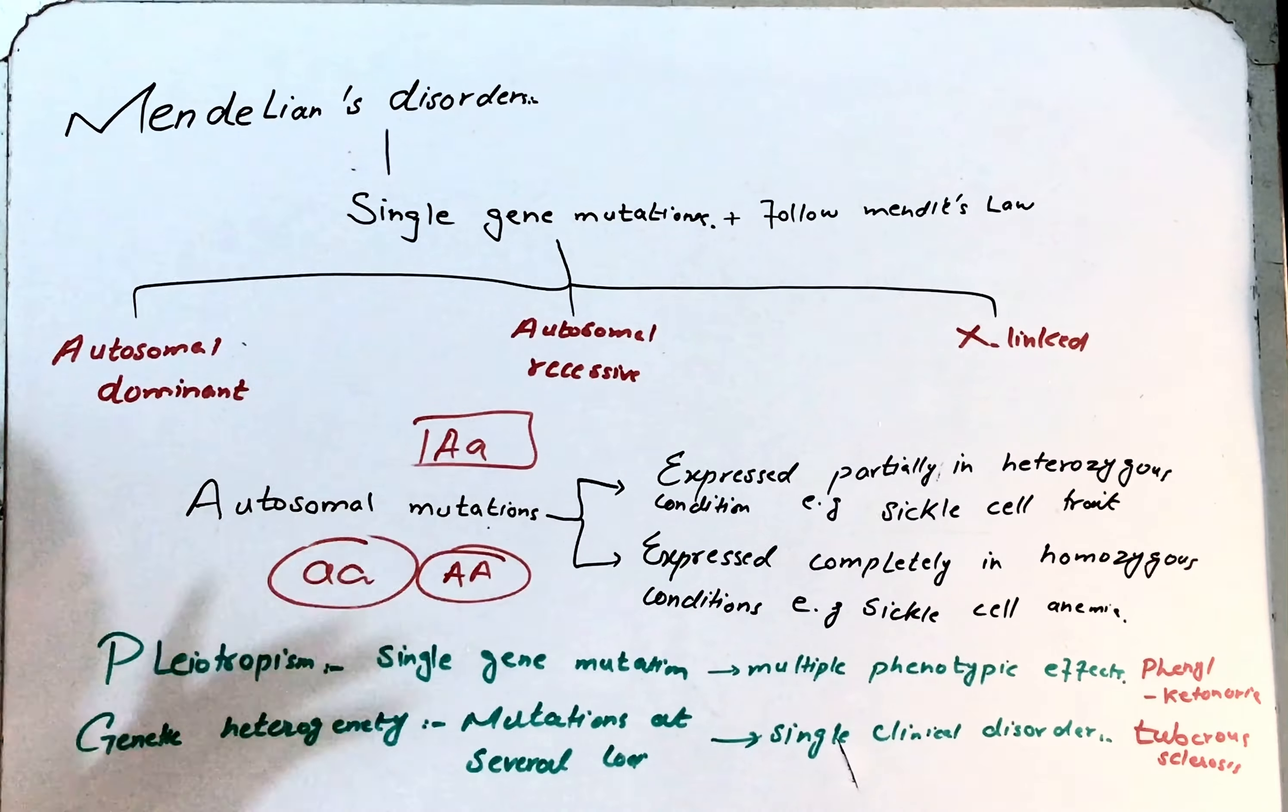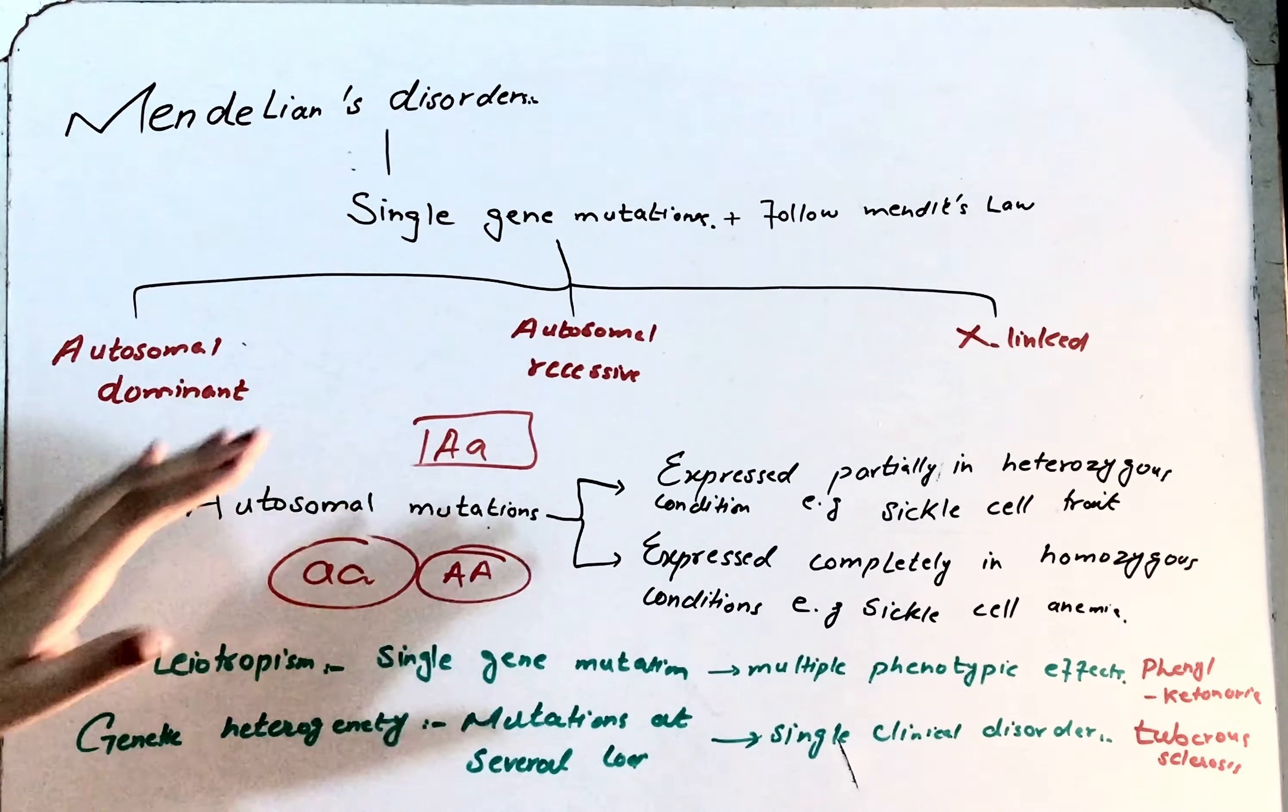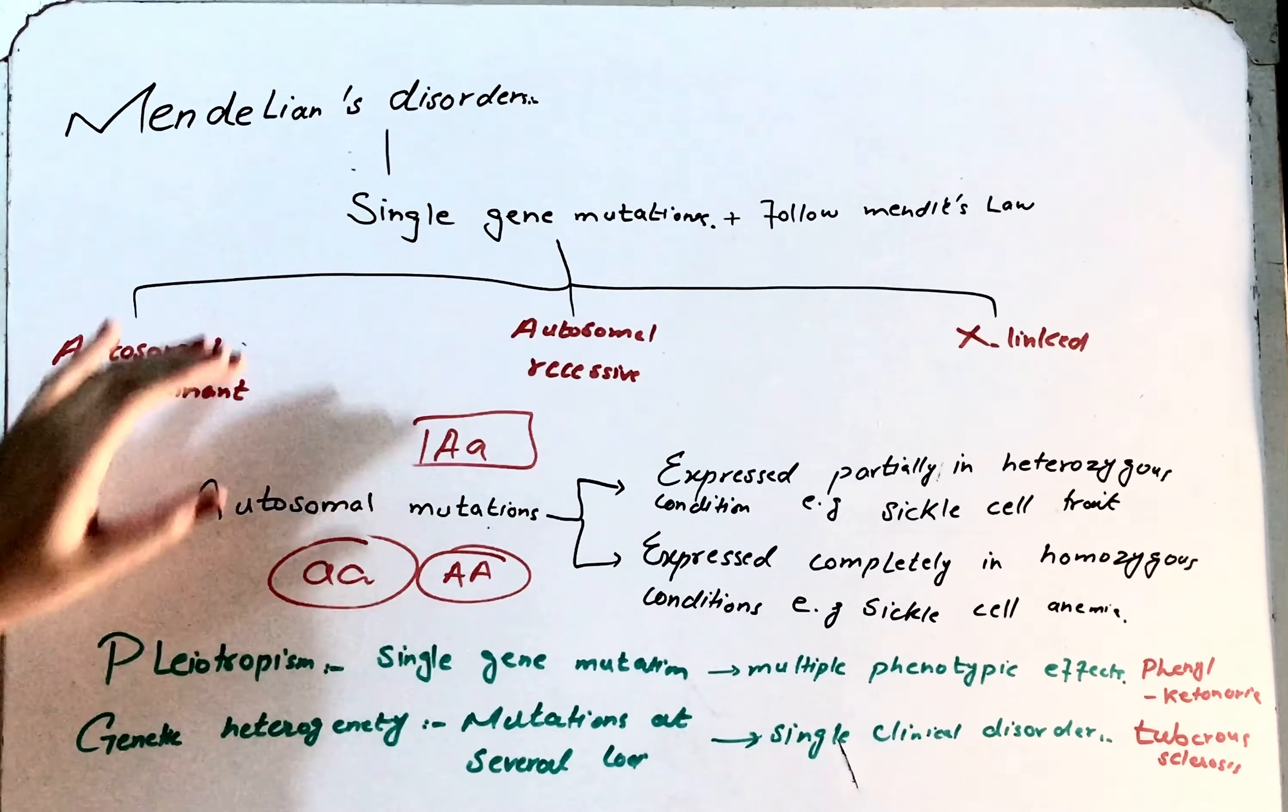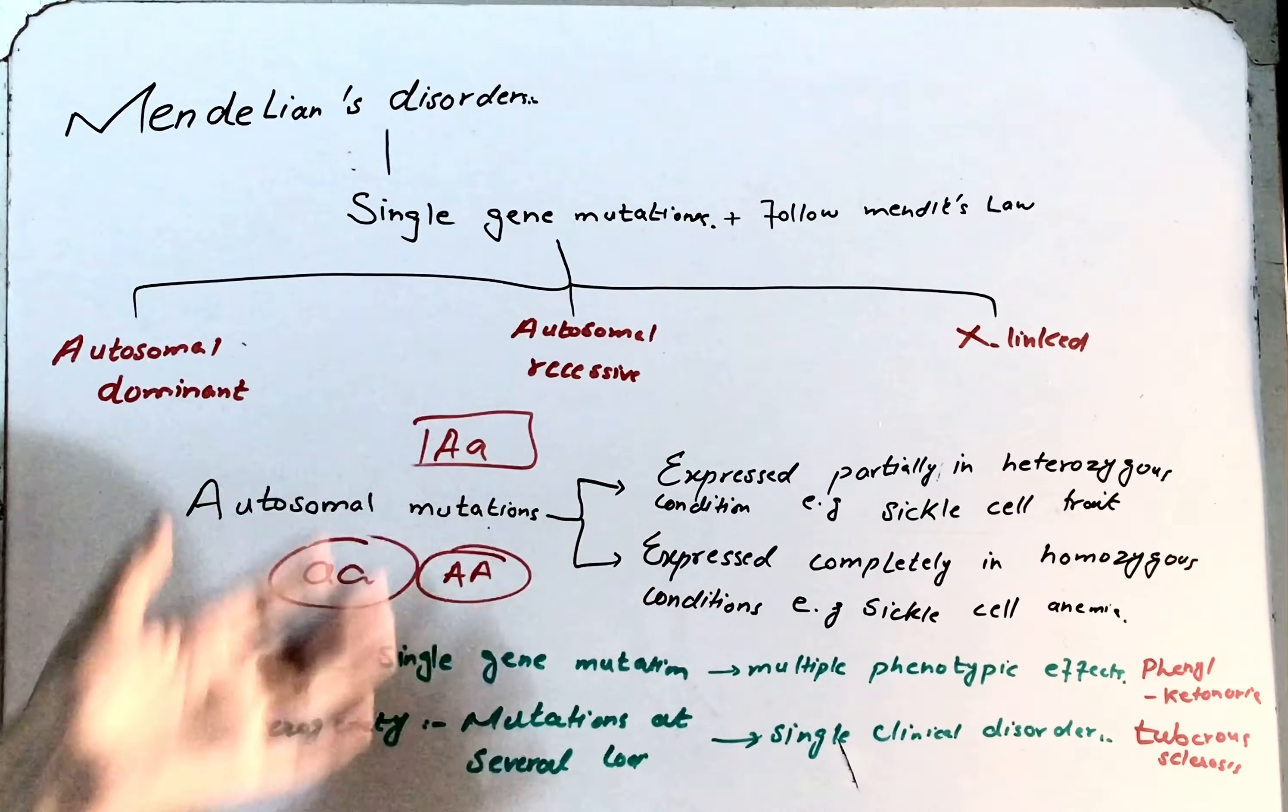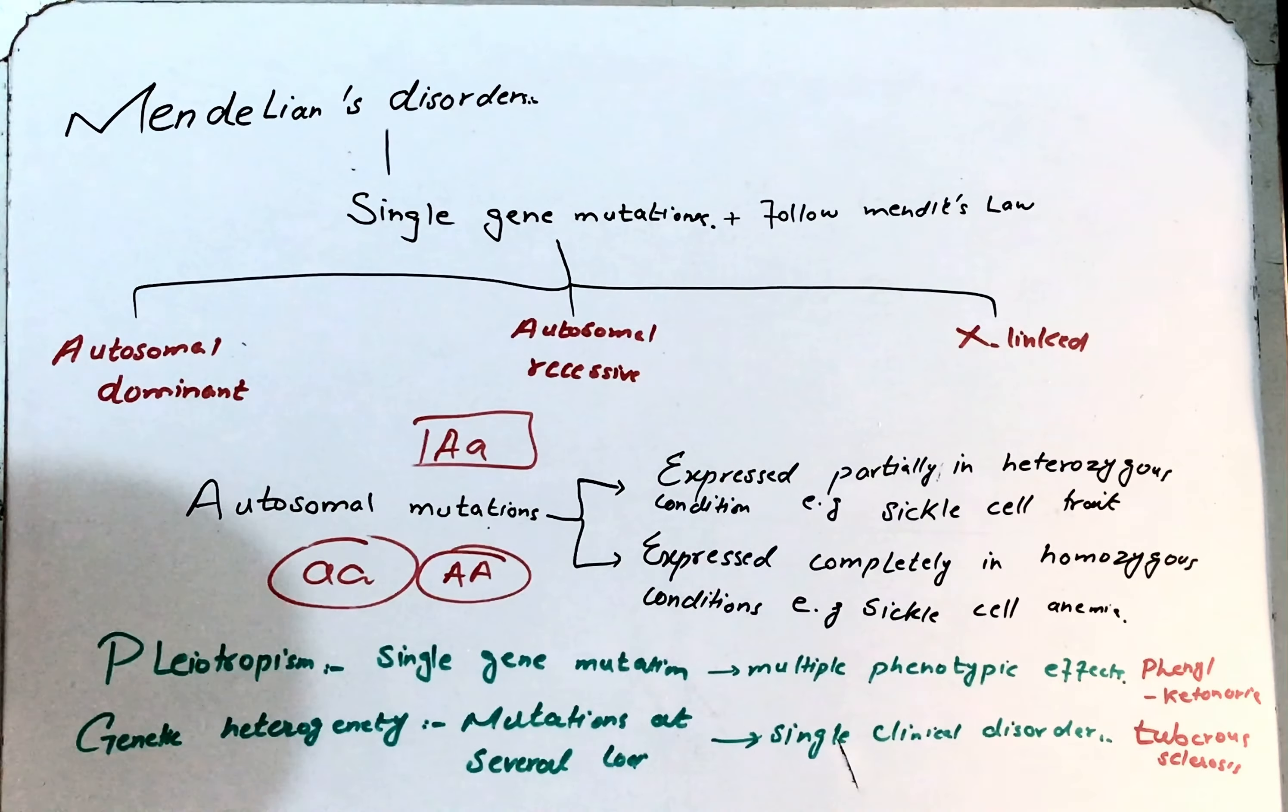And if the individual is heterozygous for that condition, then some proportion of hemoglobin will be of type hemoglobin S and the remaining will be of type hemoglobin A, which is normal. In this heterozygous condition, there is partial expression of that trait, which is known as sickle cell trait.